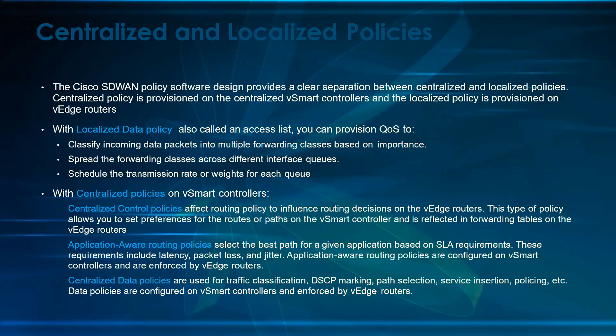Centralized data policies are used for traffic classification, DSCP marking, path selection, and service insertion. Data policies are configured on the vSmart and enforced on the vEdge router. In a nutshell, centralized policy means something which is applied on the vSmart, and the localized policy is something which is applied on the device itself.